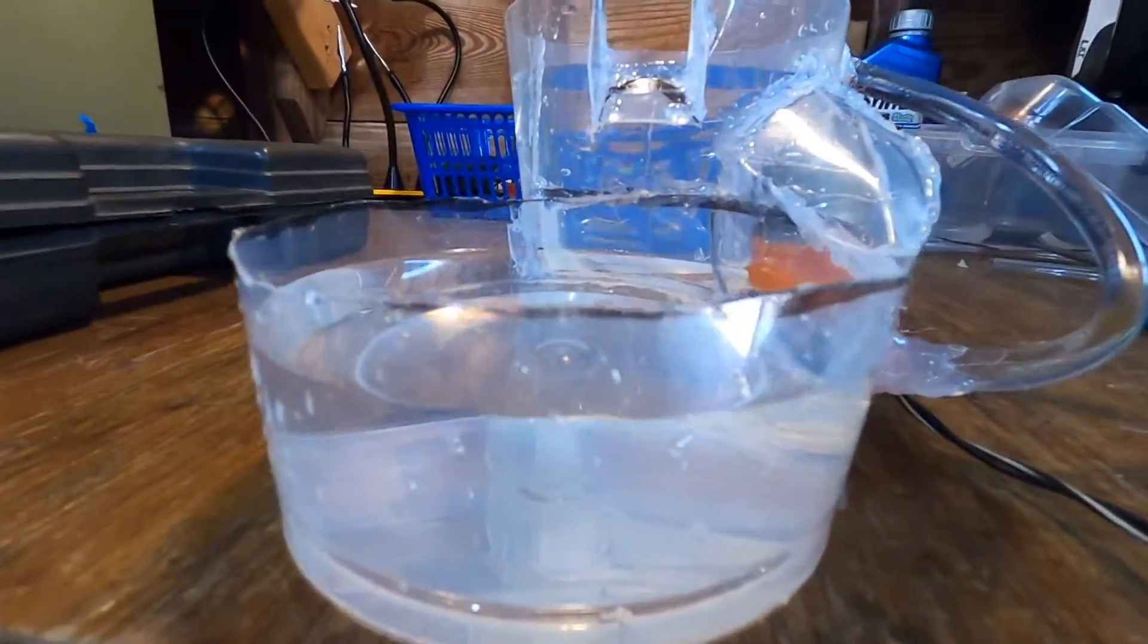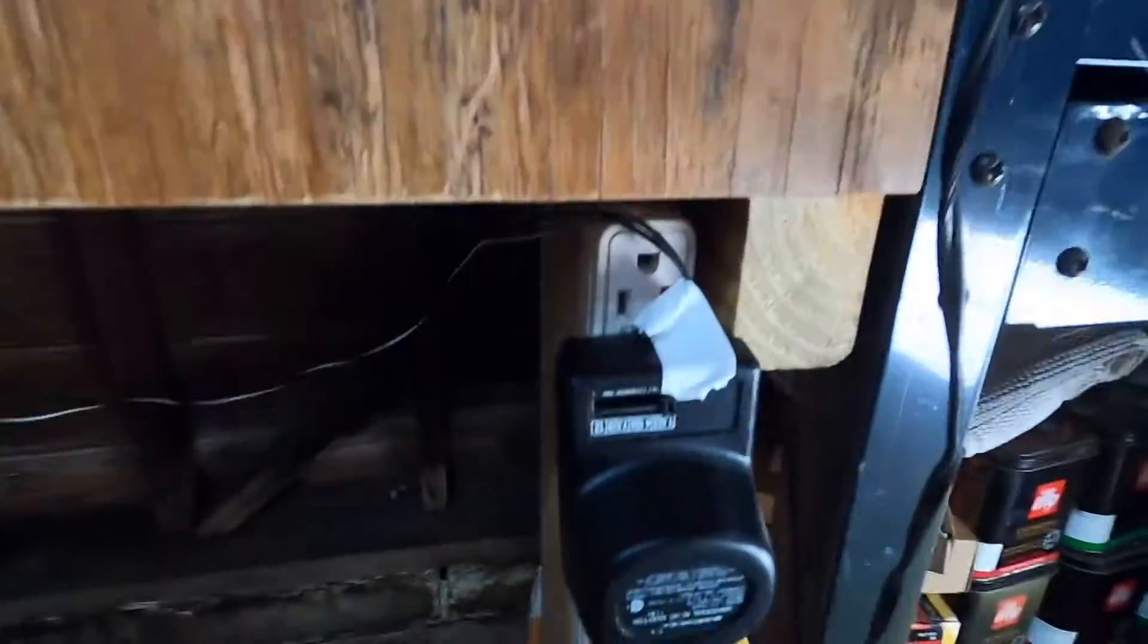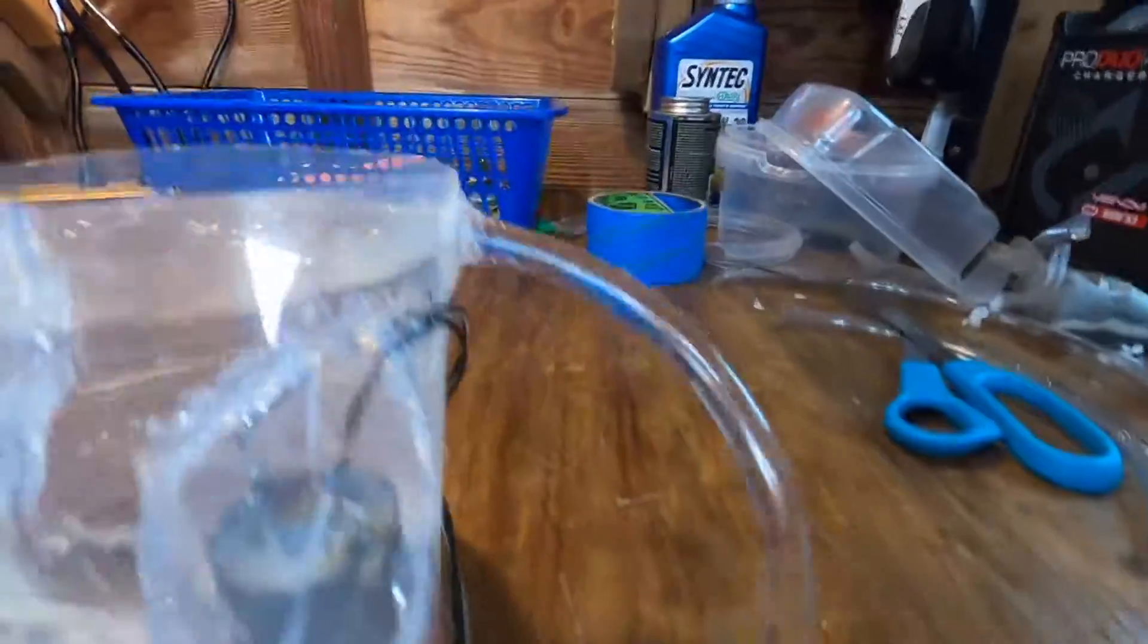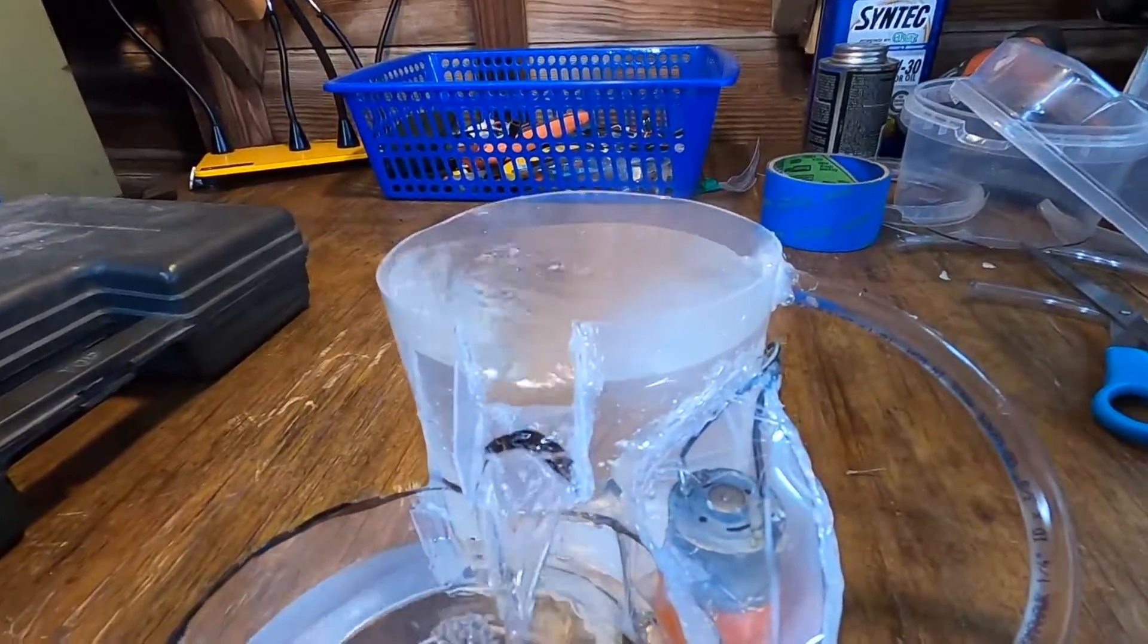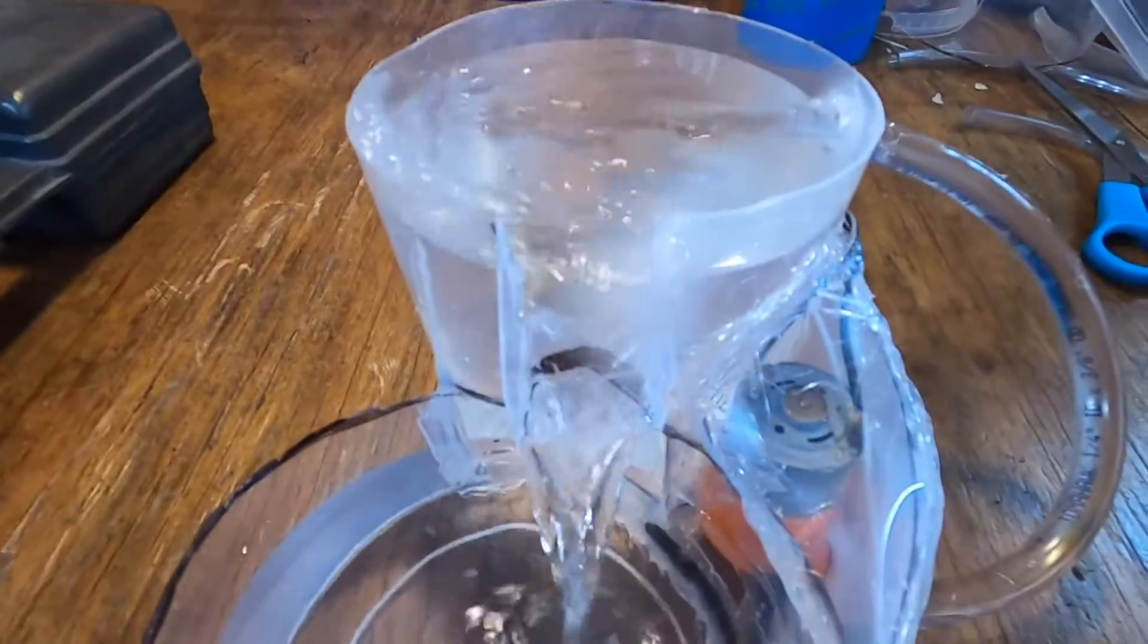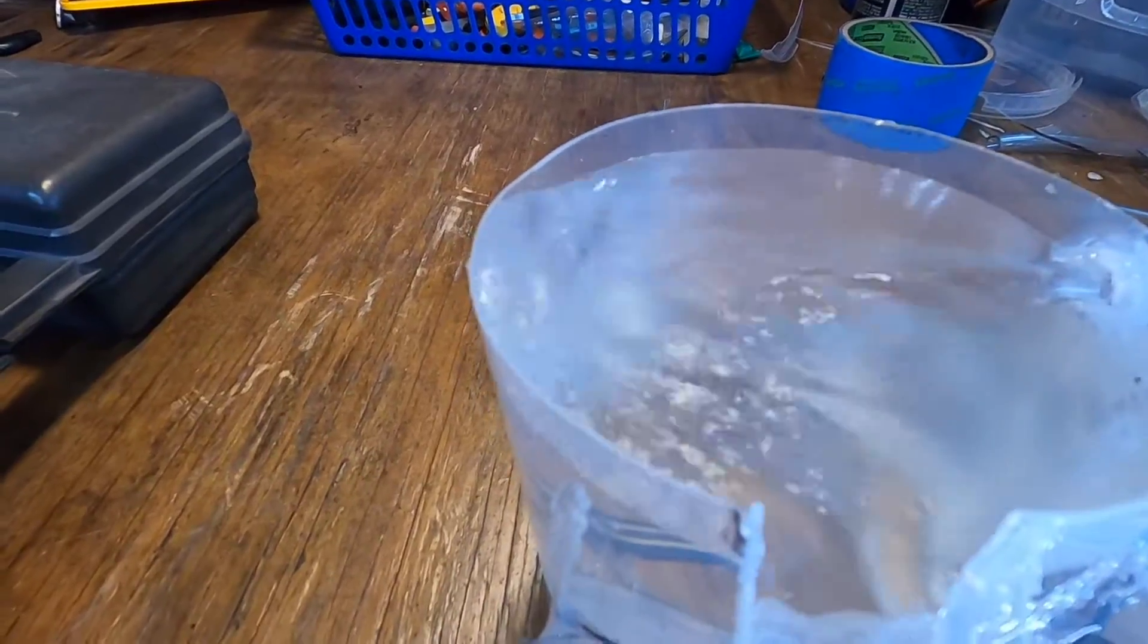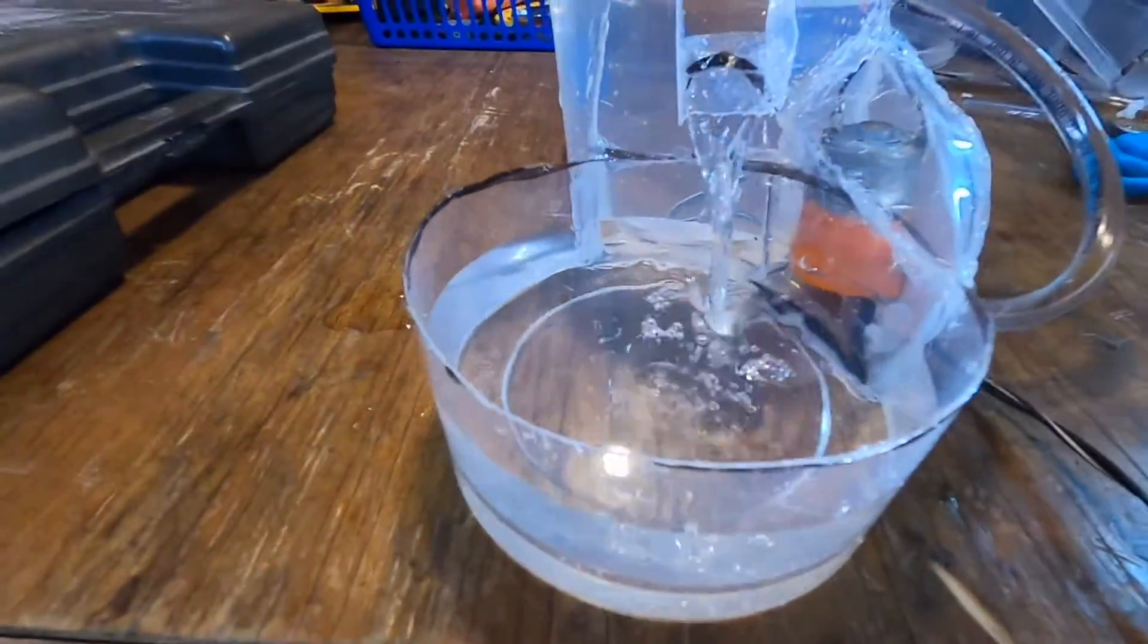And right now it is on the lowest power setting. So you can see water is just barely trickling out. So if we put that up a couple notches. There we go. Now we can even turn it up another notch. I think if I turn it up one more it might just overflow out of the top. Yeah. So there we go. We are done.